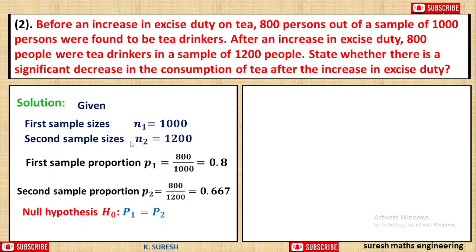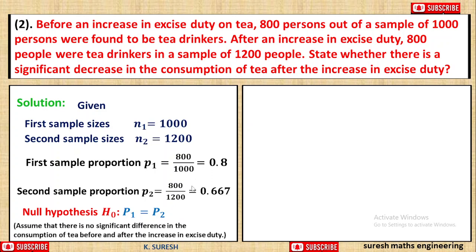The null hypothesis for the large sample two difference proportion test is: capital P1 equal to capital P2, meaning there is no significant difference between the populations. The alternative hypothesis is P1 greater than P2.